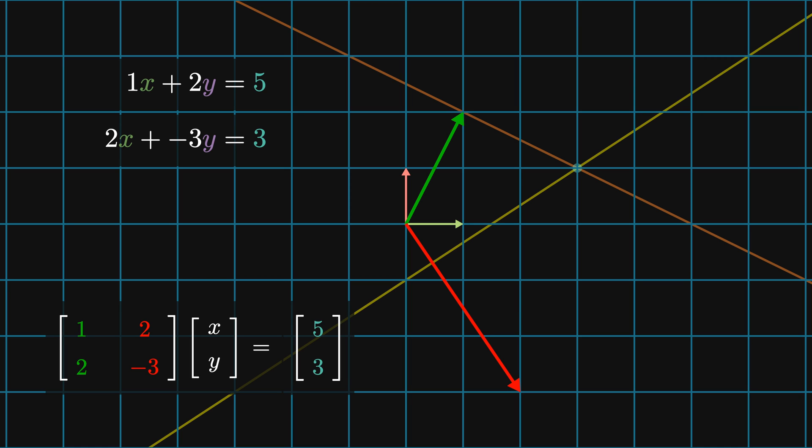What we're looking for is a matrix transformation that maps these initial vectors into a basis where x equals [1, 0] and y equals [0, 1]. This also maps the vector [5, 3] into the solution. So let's see how it works.